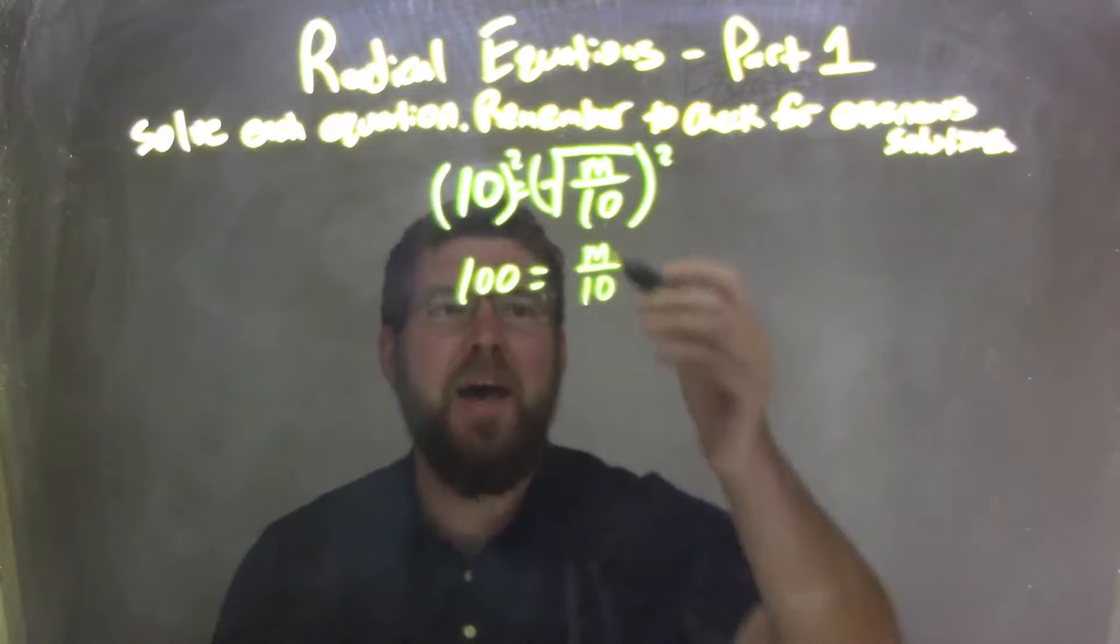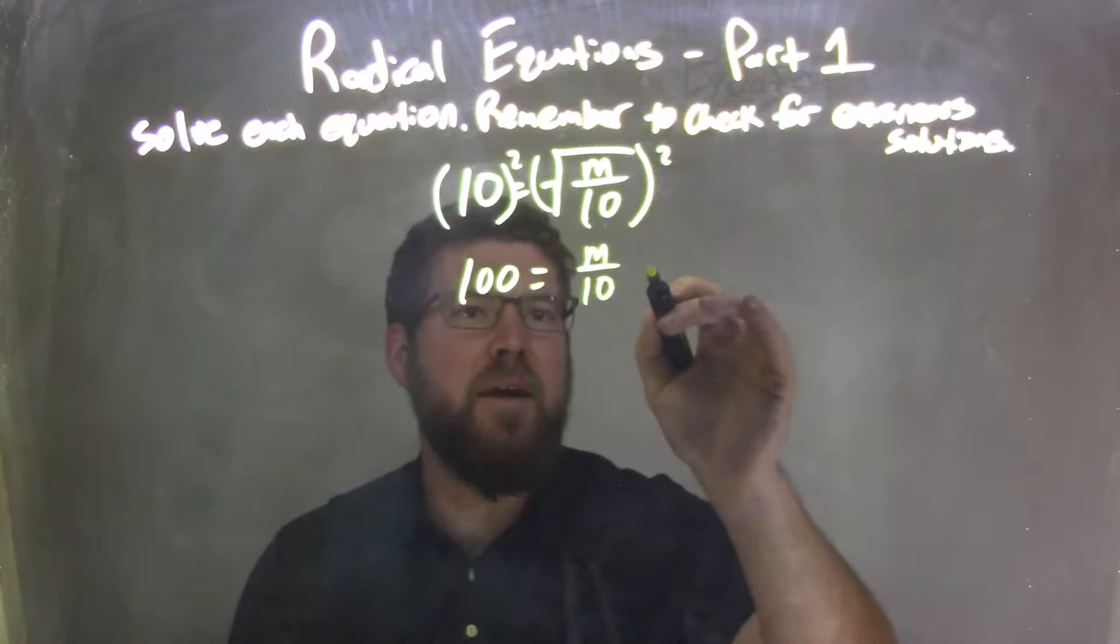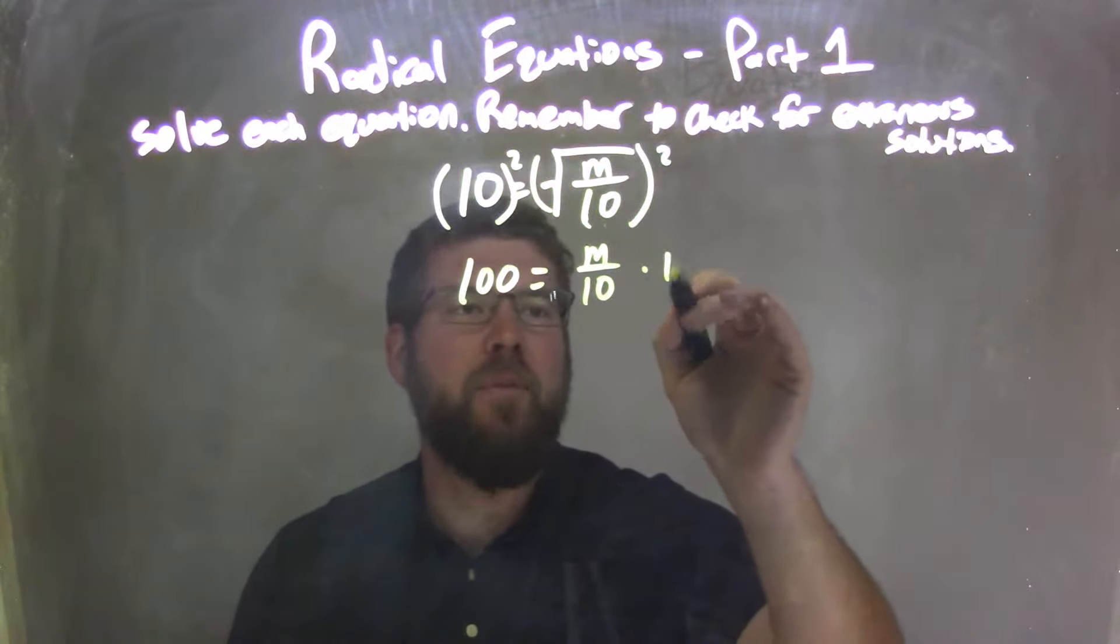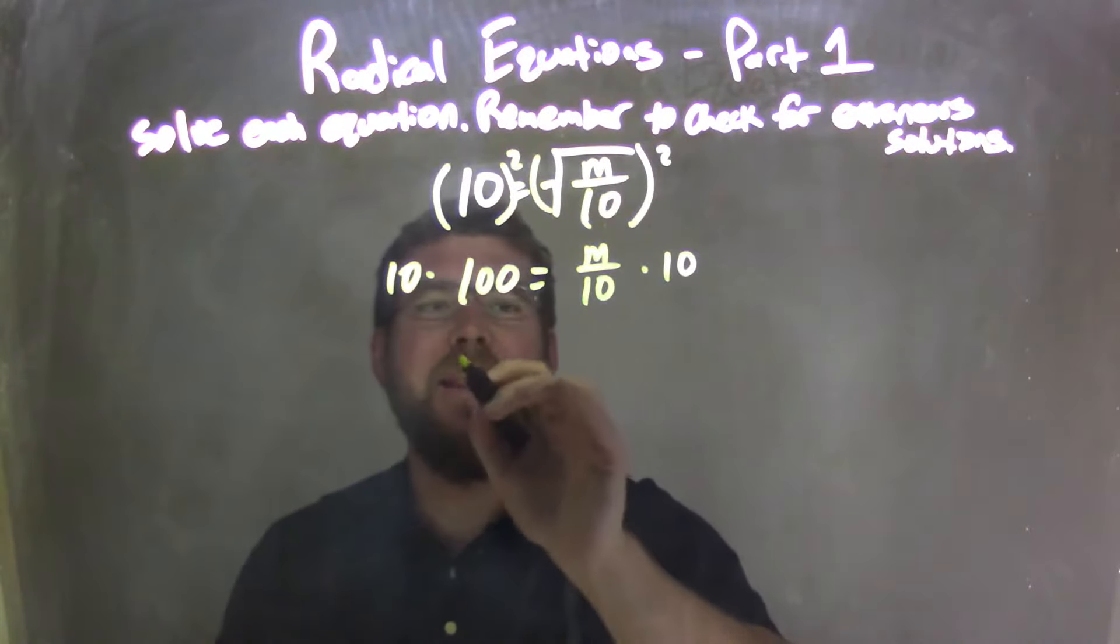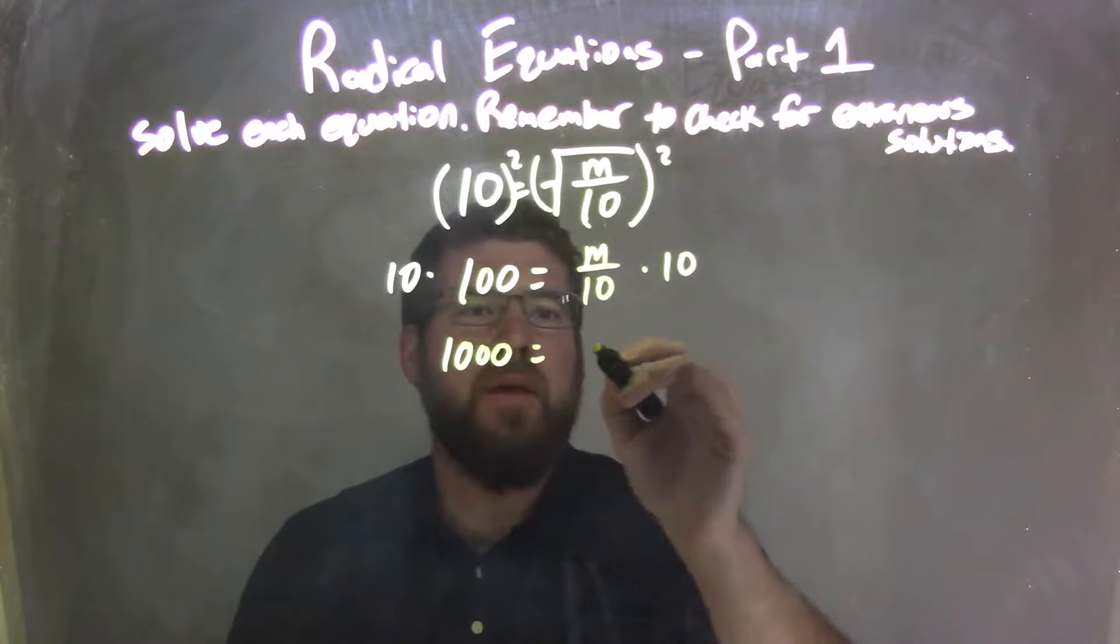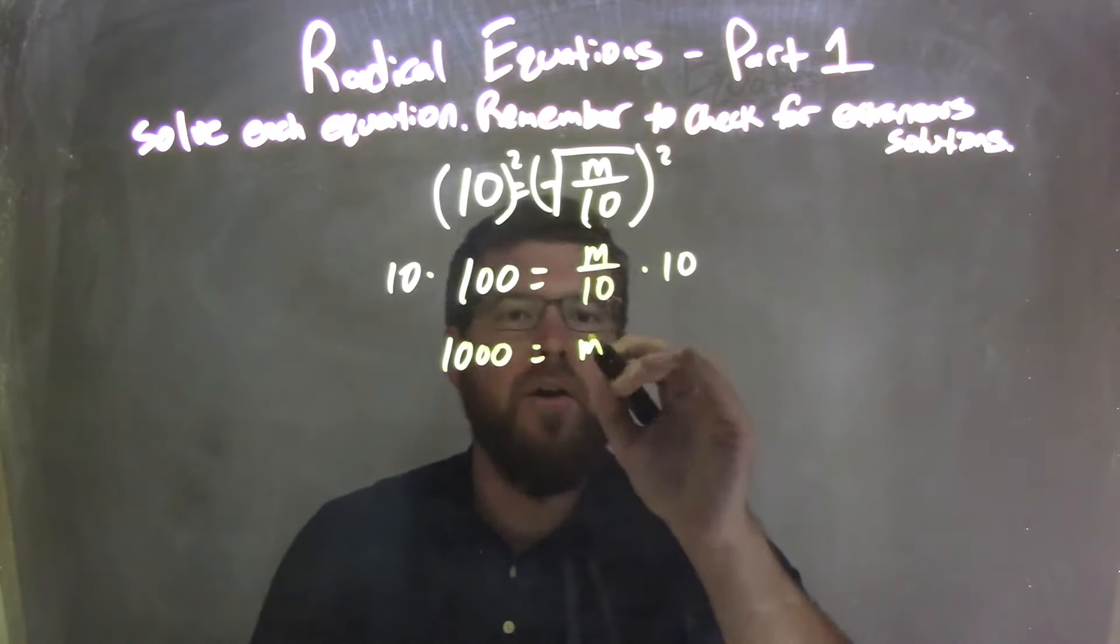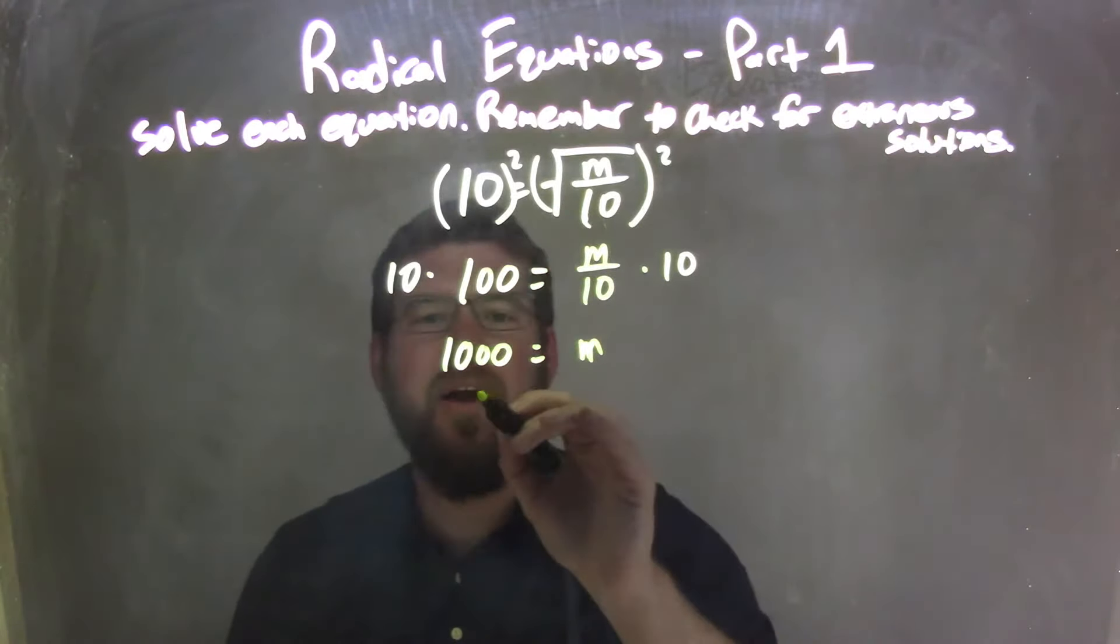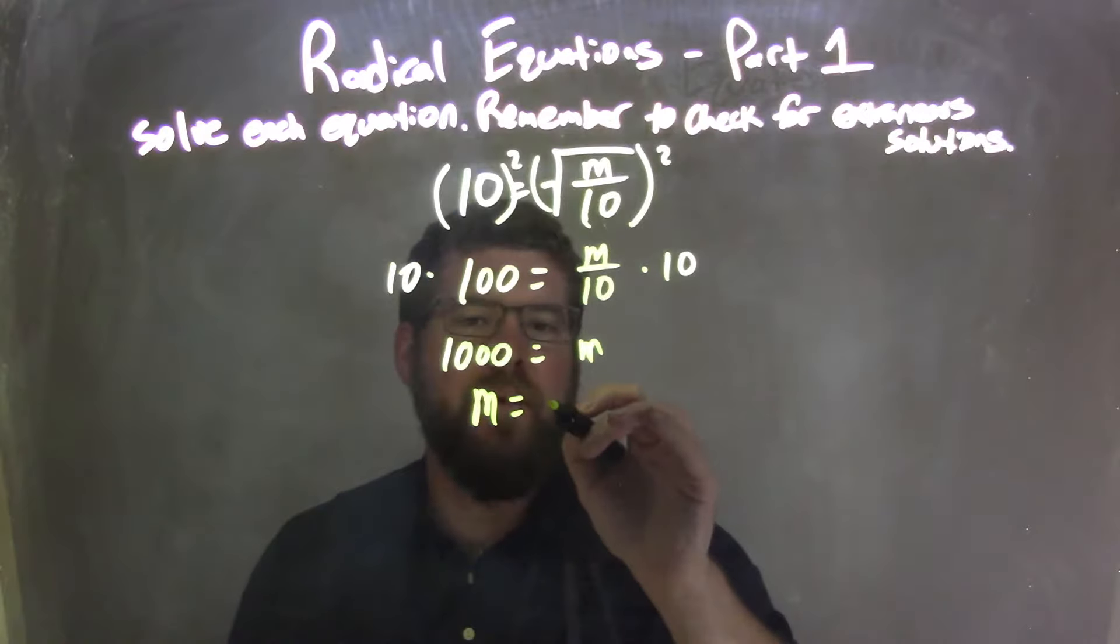I then see m divided by 10, get rid of that. Opposite division is multiplication. I multiply both sides by 10, leaving me with 1,000 equals just m. So I have m equals 1,000, and we can write it nice and neat, m equals 1,000.